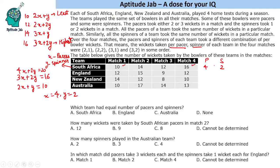Solving for England: taking the highest value 3x + 2y = 15 and the lowest value 2x + y = 9, subtracting gives x = 3 and y = 3. So England has 3 pacers and 3 spinners — equal numbers of each.